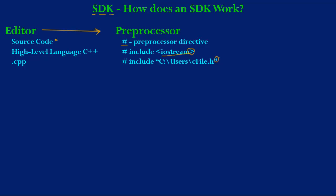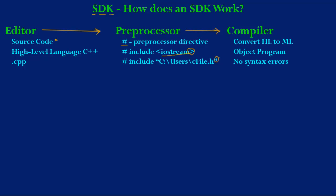Once the preprocessor program has run, it is now time for the compiler. So what does the compiler do? The compiler's role is to convert the high-level language into machine language, and it creates an object program. An object program is a machine language version of the C++ code that you typed — more generically, a machine language version of a high-level programming language. In order for this to work, there has to be no syntax errors in your source code.